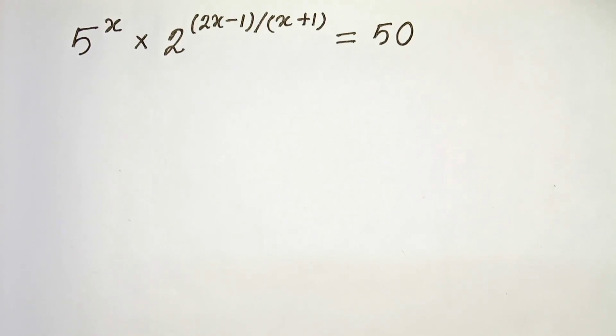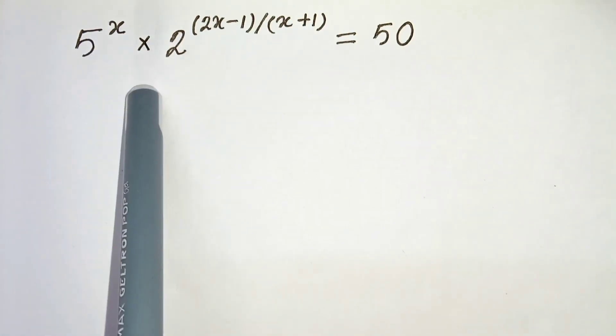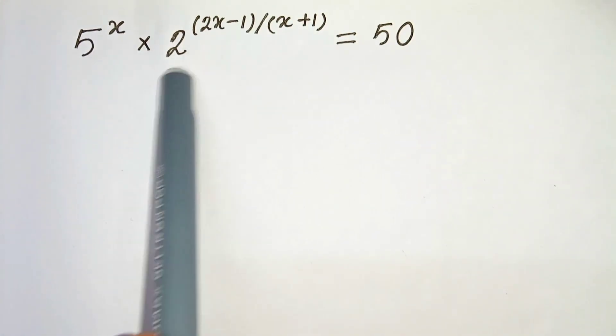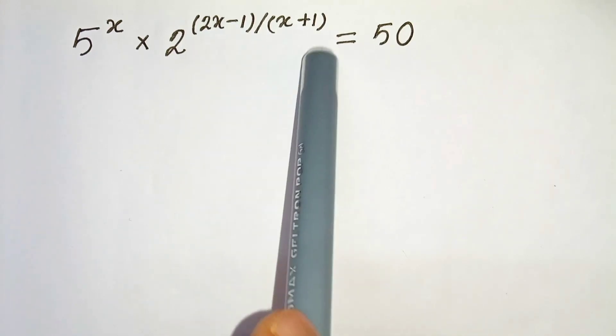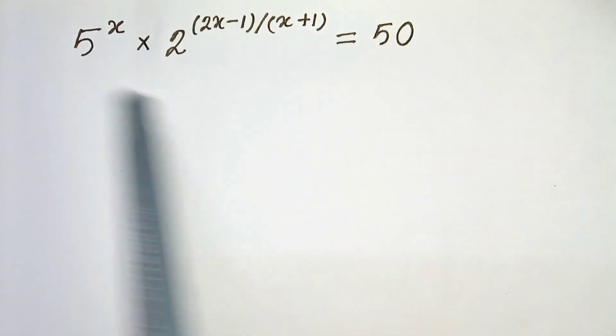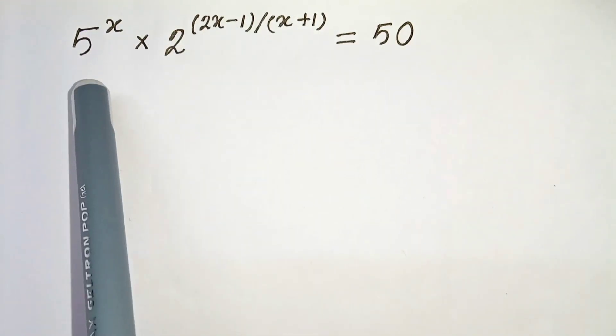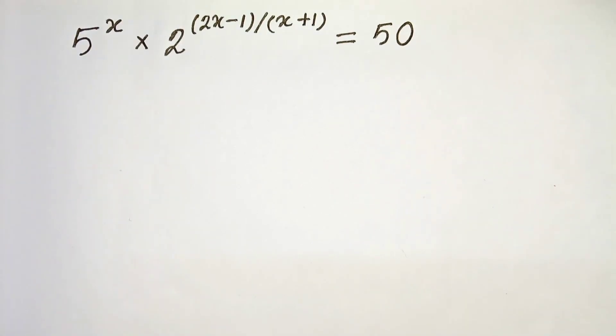Hello everyone. In this video we have 5 to the power x times 2 to the power (2x minus 1) divided by (x plus 1) equals to 50. We have to solve this and find the value of x. So let's start.